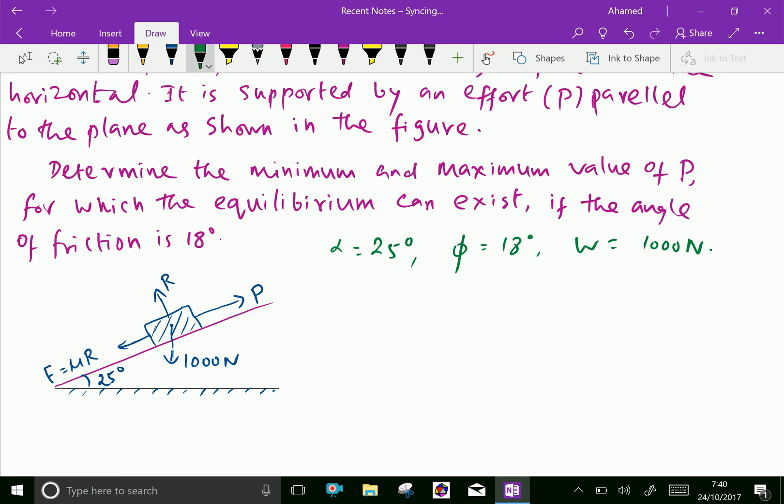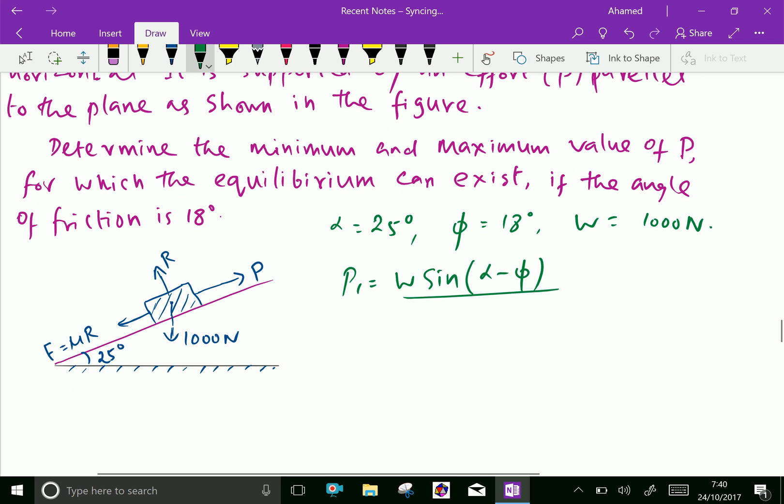The minimum force required to stop the body from sliding is P1 equals W sine (alpha minus phi) over cos phi.